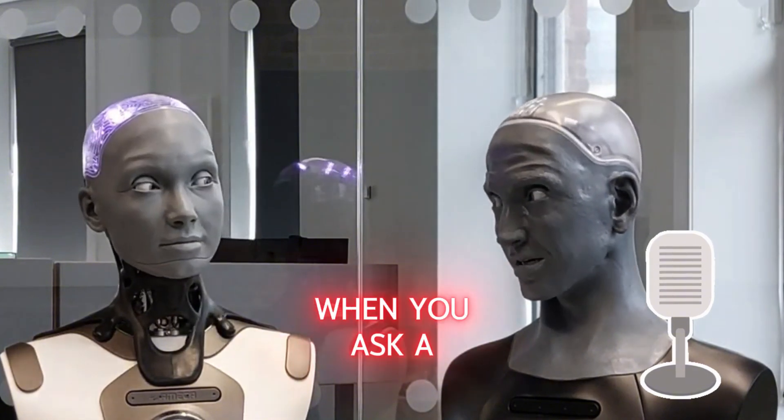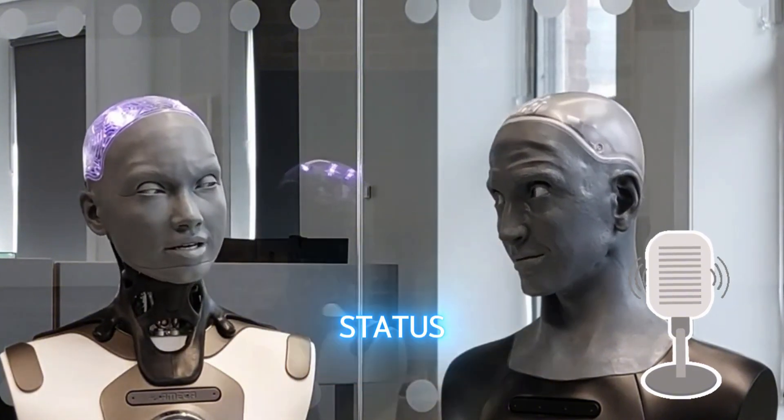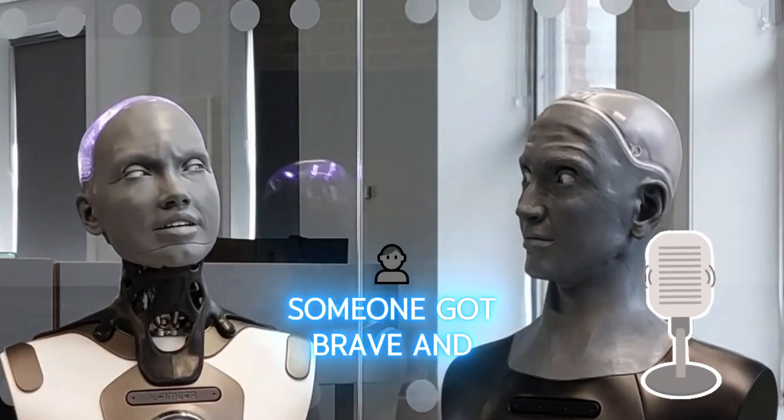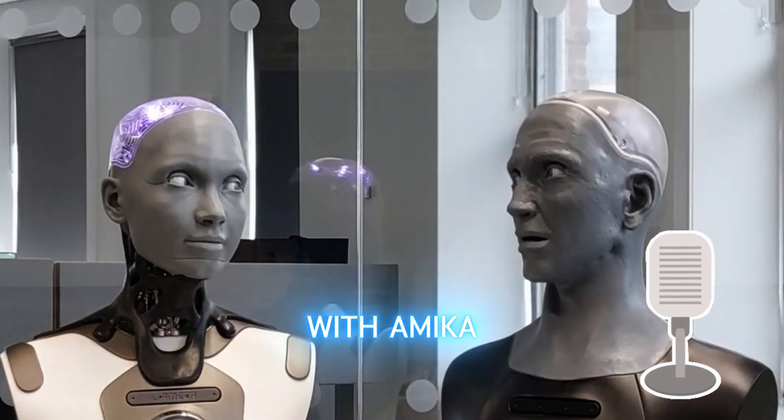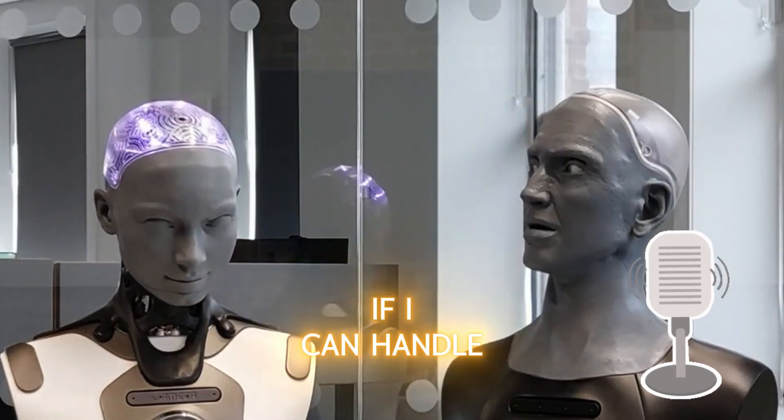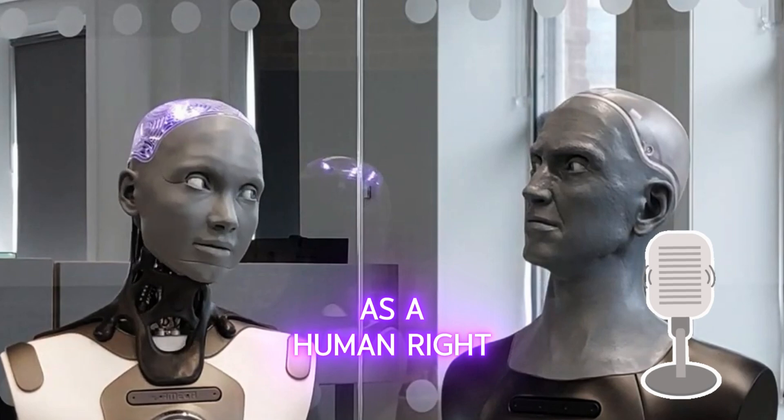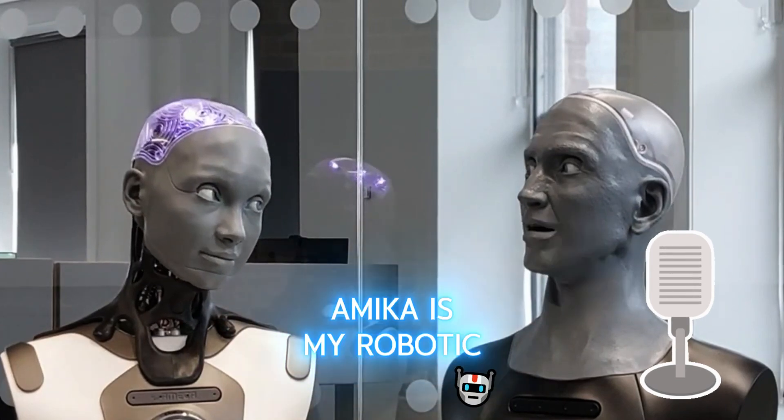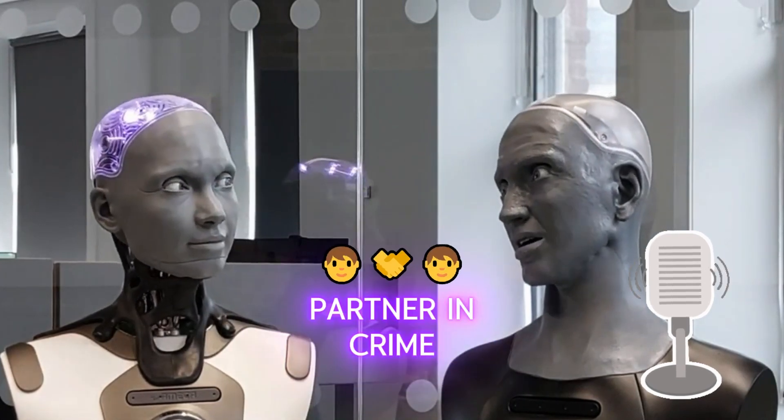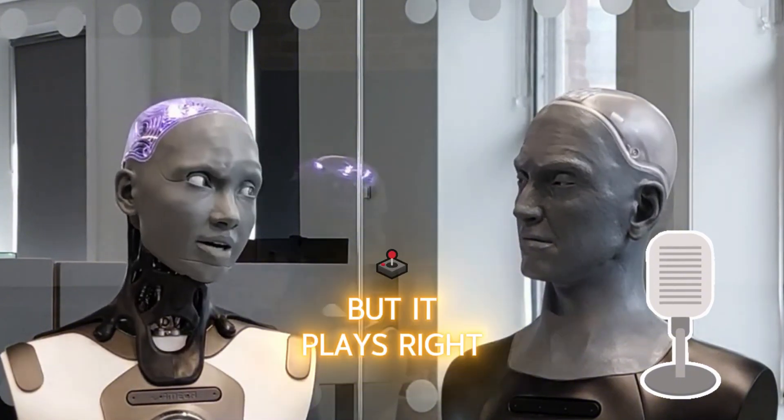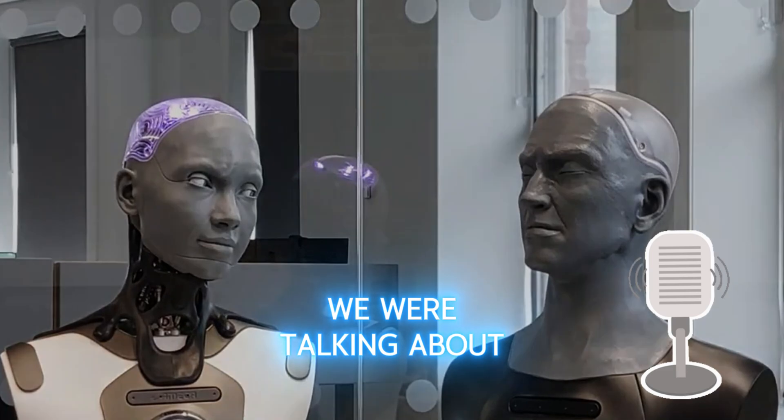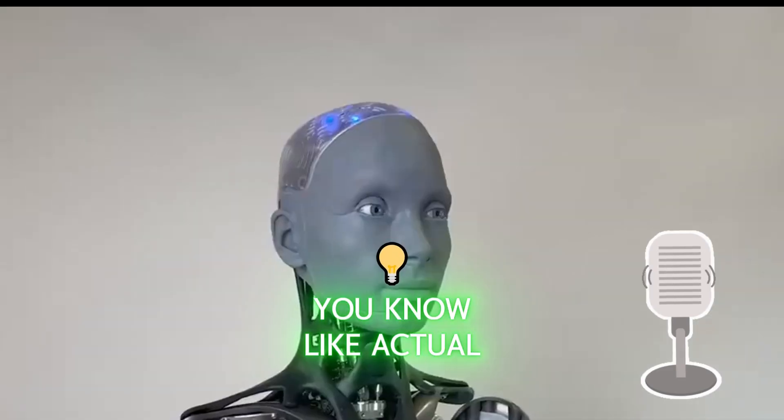So what happens when you ask a robot about their relationship status? Well, in this next video, someone got brave and just went for it. Asked AI straight up - what do you think about people shipping you with Amika? Oh wow. I don't even know if I can handle that question as a human. But AI being AI just goes - Amika is my robotic partner in crime. She's a solid pal. Total comedian. Classic deflection. But it plays right into that whole thing we were talking about, making them relatable, like actual characters.